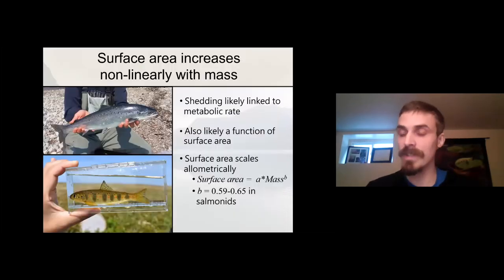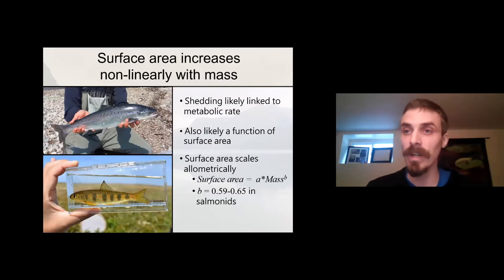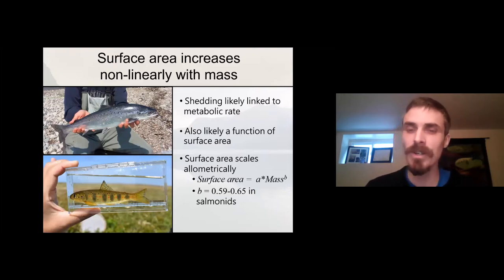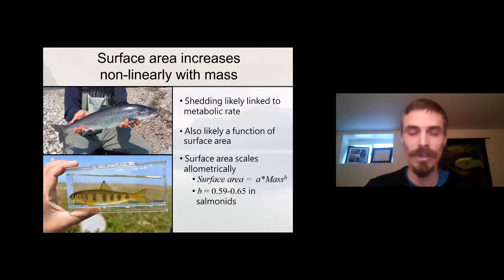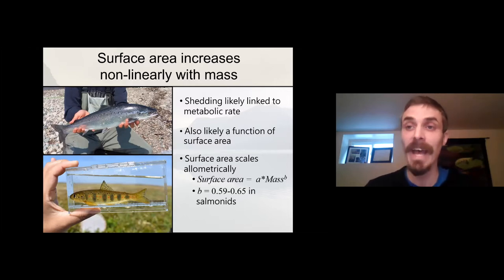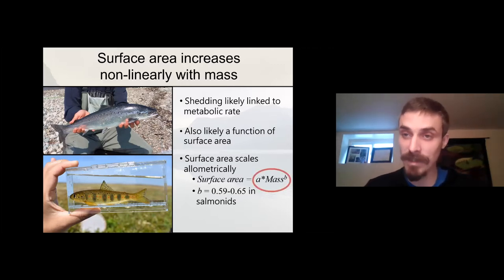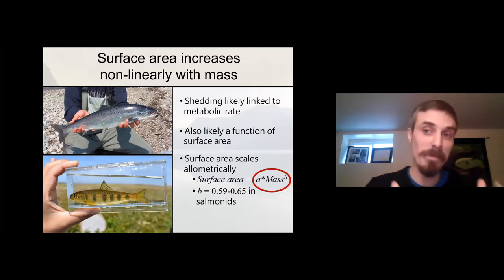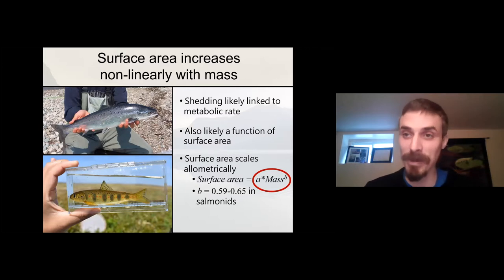But that's one process involved in eDNA production. What about shedding? Shedding is likely also linked to the metabolic rate of an organism and its physiology, but it's also predominantly probably a function of the total surface area of that organism. A lot of research has demonstrated that surface area also scales allometrically and can be modeled using the exact same framework — modeling surface area as a function of individual mass raised to the power of a scaling coefficient.